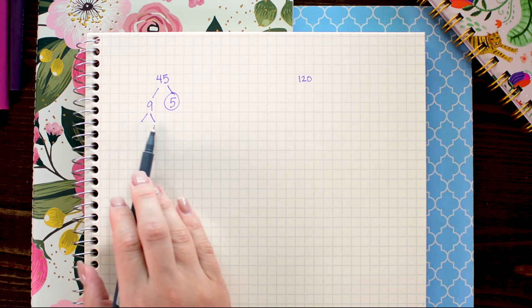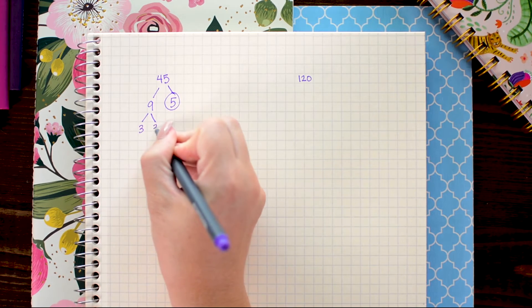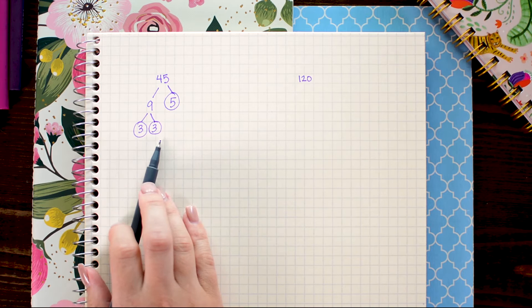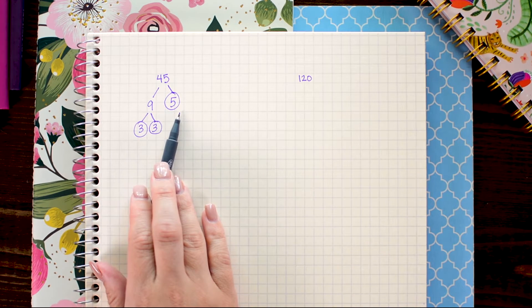Now I want to think of any numbers that multiply to 9. So here I think about 3 times 3 and those are both prime numbers so I'm gonna circle them. Once all my branches are complete I have found the prime factorization.